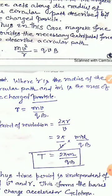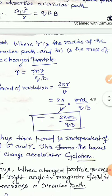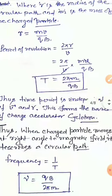The magnetic force provides the necessary centripetal force, so mv²/r = QVB, giving r = mv/(QB). The period of revolution is the circumference 2πr divided by speed V, giving T = 2πm/(QB). Notice that the time period is independent of the velocity and the radius of the circular path — this forms the basis of the charge accelerator, the cyclotron.